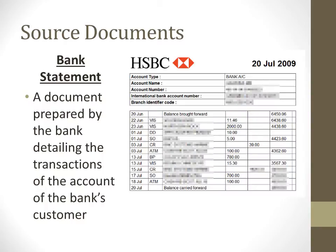Just as the owner or company records its own cash and bank transactions in the cash book, if you have an account with the bank, the bank also prepares its statement for you. A bank statement is a document prepared by the bank, and it details the transactions of the account of the bank's customer — the owner. It details all the transactions made in my account, and this statement will be sent to the owner on a monthly basis.